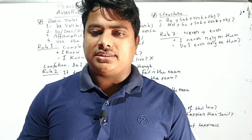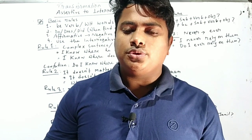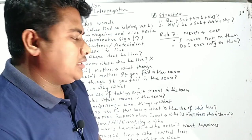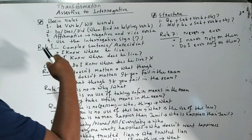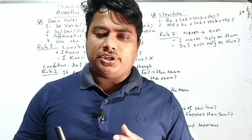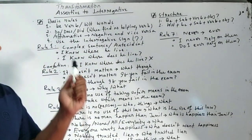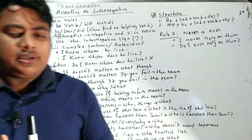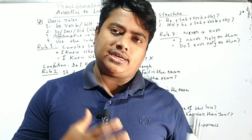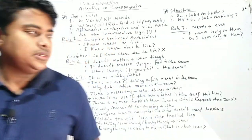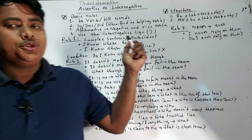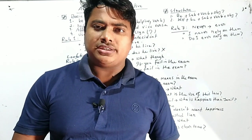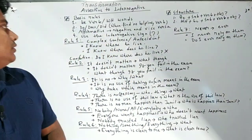Another basic rule: in cases where we don't find any B-verb or helping verb in the sentence, we use do, does, or did — sometimes do not, did not, or does not. Also remember: an affirmative sentence will become negative and vice versa — a negative sentence will become affirmative. Lastly, we must use an interrogation sign at the end of the sentence.